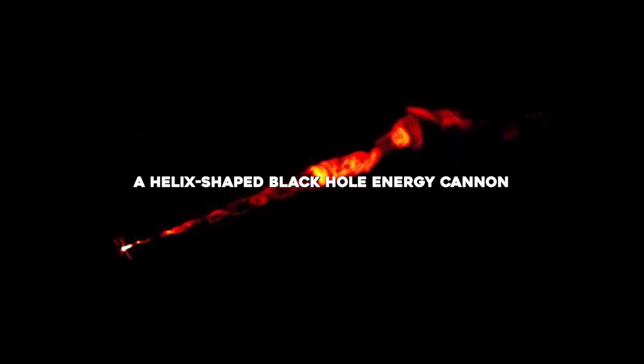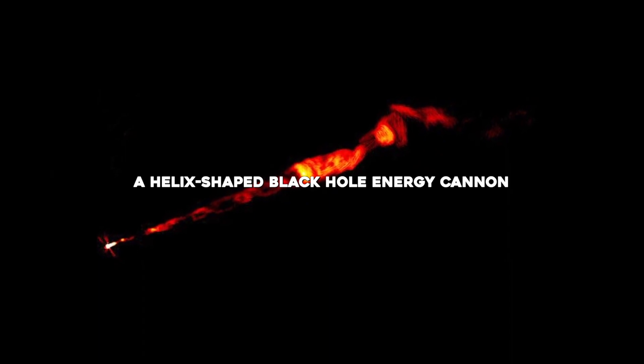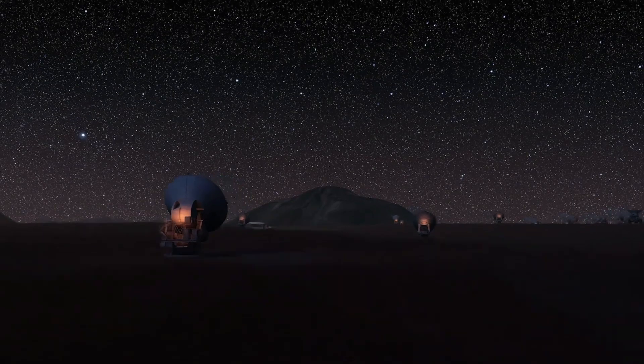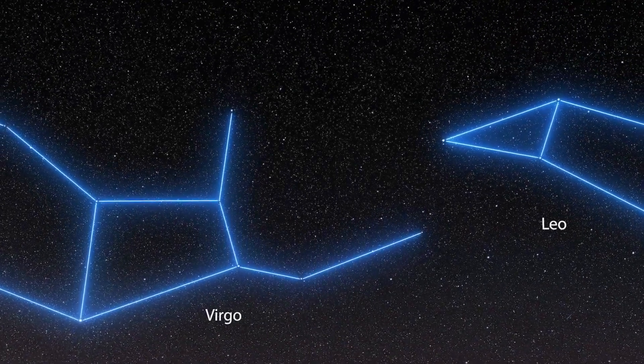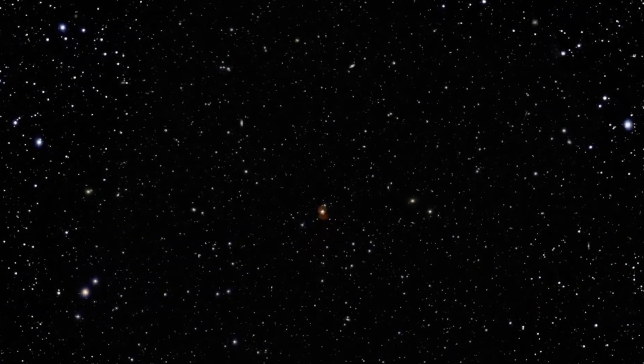A helix-shaped black hole energy cannon. In 2019, researchers released the first and so far only photograph of a supermassive black hole, a gargantuan object about 6.5 billion times as massive as the Sun, and located some 55 million light-years from Earth in the galaxy Messier 87.